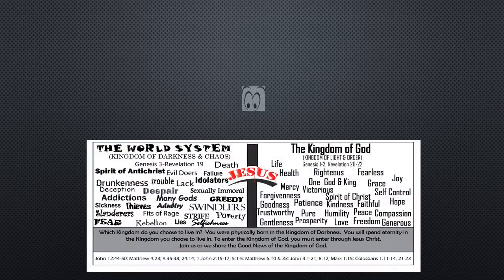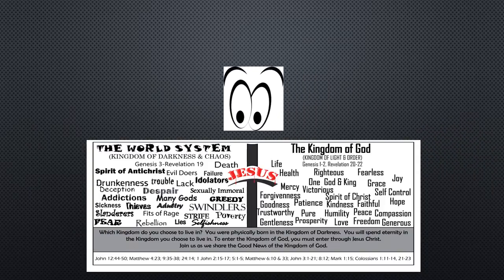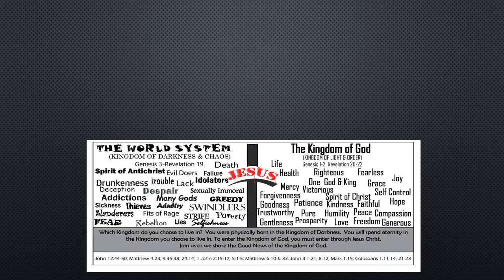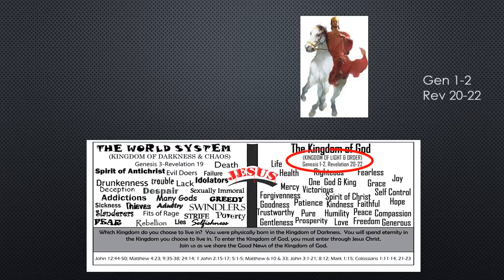First thing you do when you get your bookmark is take it out and take a good look at it. You're going to want to memorize the behaviors that are found in each kingdom. I'm going to take just a minute here to go over it with you so you can have a good idea of just briefly how this bookmark is laid out. The right hand side, you'll see the kingdom of God. It's the kingdom of light and order. Of course, the king of that kingdom is Jesus Christ. In scriptures, you're going to see that kingdom of God reflected in Genesis 1 and 2 and then again in Revelation 20 through 22. That's when the kingdom of God is actually on the earth ruling.